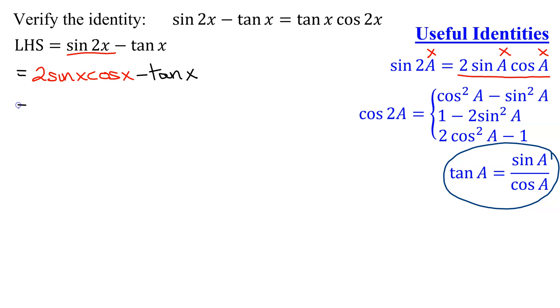So I'm going to have 2 sine x times cosine x. I know I'm going to have to add fractions in a minute, so I'm going to leave a little room. Minus, instead of the tangent of x, I'm going to have the sine of x divided by the cosine of x, using this identity here.